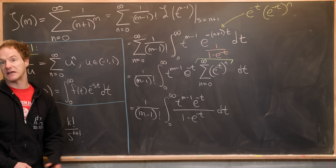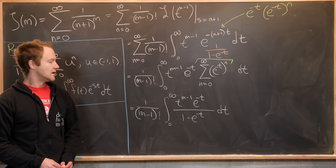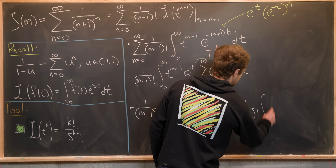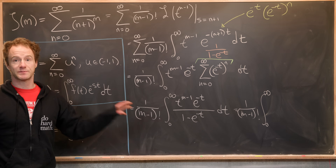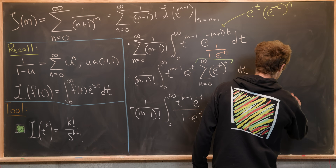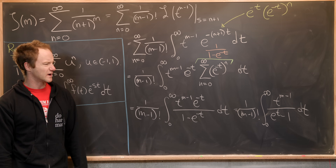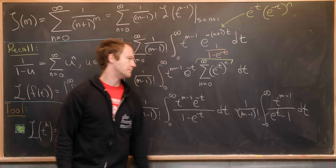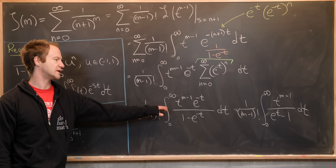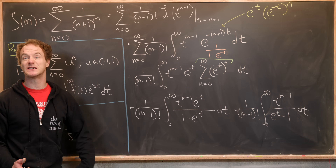We could tweak this further by multiplying numerator and denominator by e to the t. That cancels the e to the minus t in the numerator and transforms the denominator, giving 1 over m minus 1 factorial times the integral from 0 to infinity of t to the m minus 1 over (e to the t minus 1) dt. This is perhaps the most well-known integral identity for the Riemann zeta function, as found in standard references.